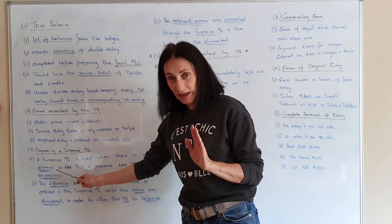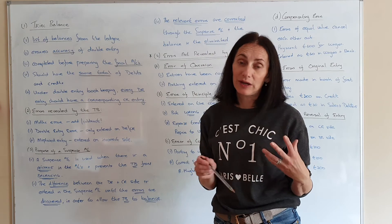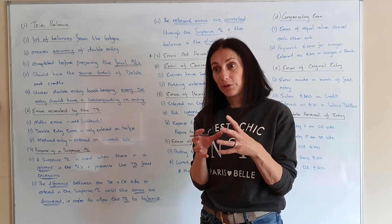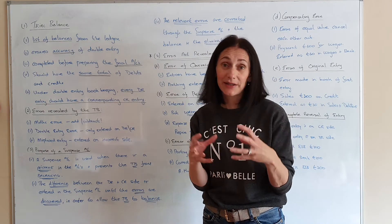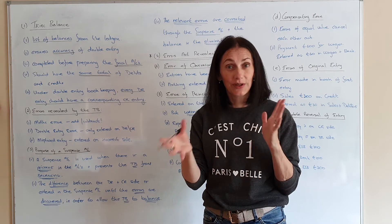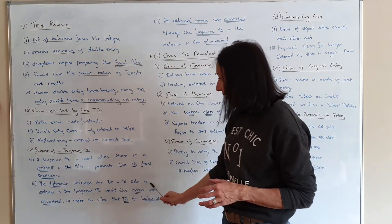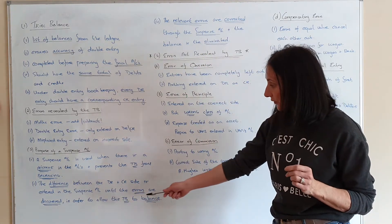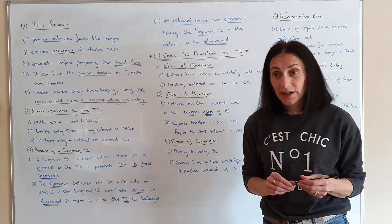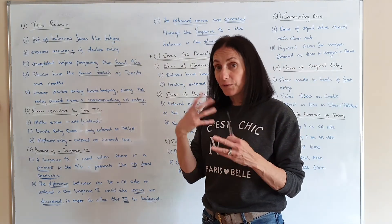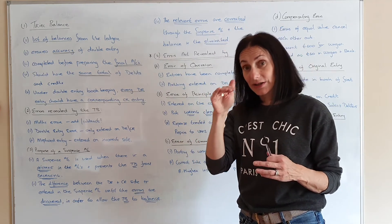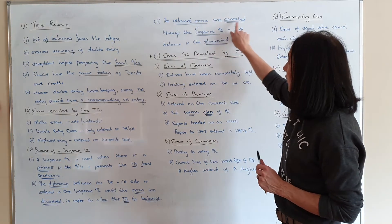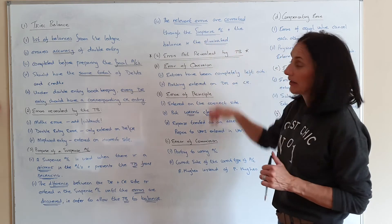To summarise: suspense is used if there's a mistake in your double entry. If the trial balance isn't balancing, you create a suspense account and put the difference in to make the accounts balance. The difference between the debit and credit side is entered into the suspense account until the errors are located or discovered, and it allows the trial balance to balance. As you find the errors, the balance in suspense starts to disappear and is completely eliminated once all mistakes are fixed.